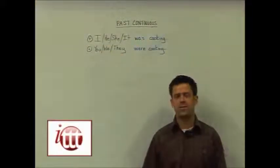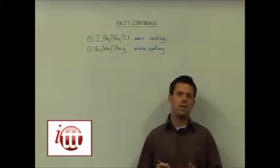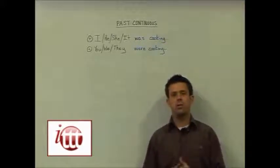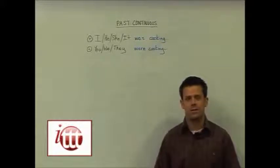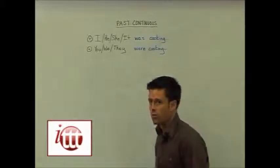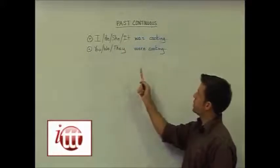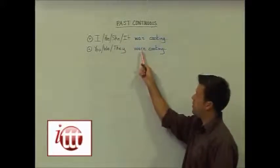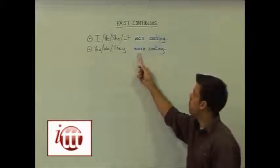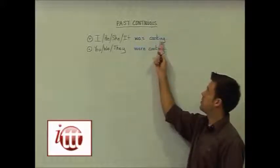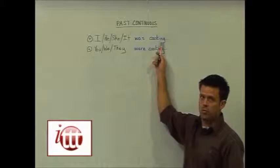Now let's have a look at the past continuous tense. This tense is used to indicate that a certain action was in progress at a particular time in the past. We form the positive by using our subject, the auxiliary verb 'to be', plus the verb in the -ing form, also known as the present participle.